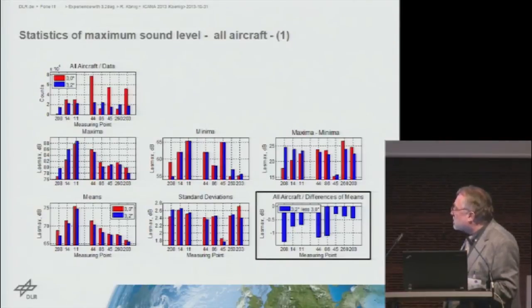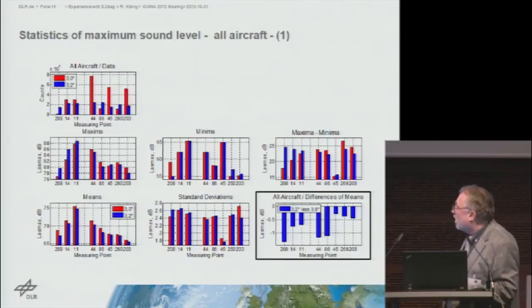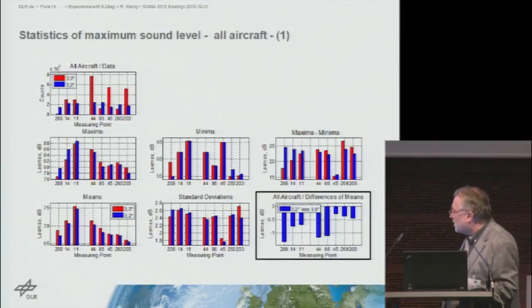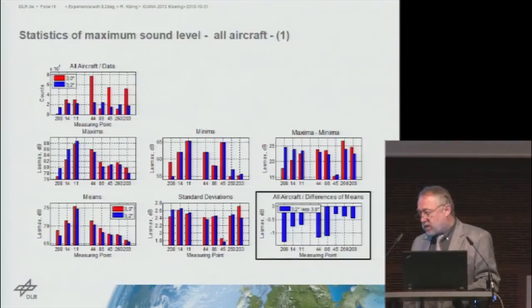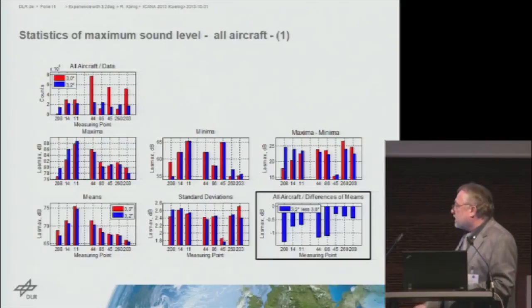Red represents 3.0 degrees and blue 3.2 degrees. It's a simple statistical evaluation reporting the maximum medium sound level. The standard deviation and means are shown: maximum, minimum, and standard deviation across all aircraft — with no differentiation by aircraft type.